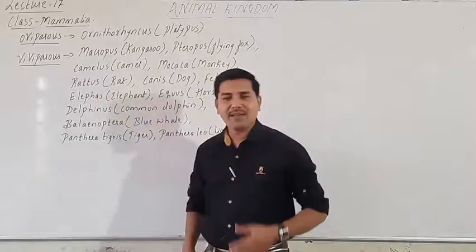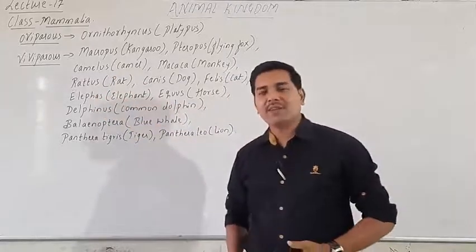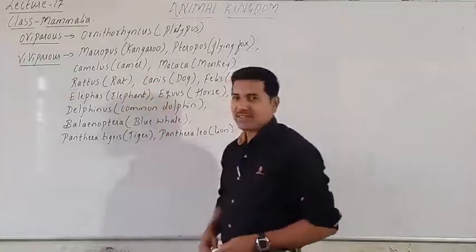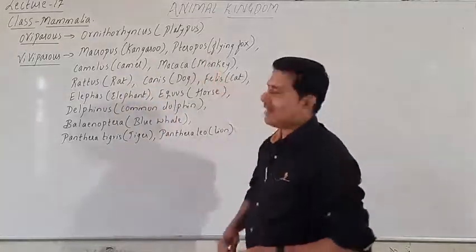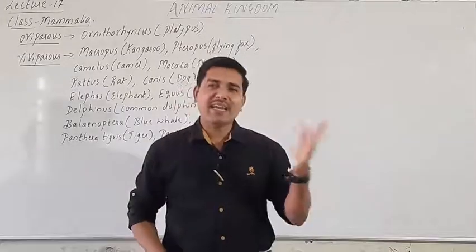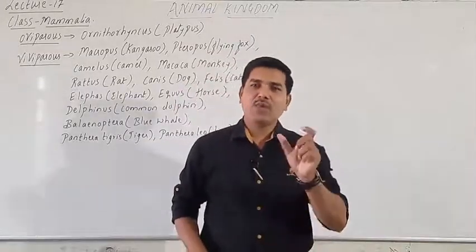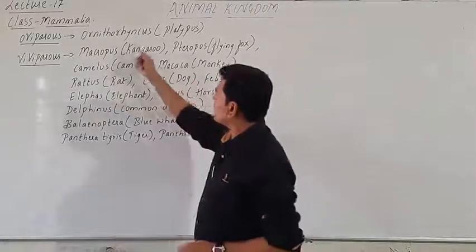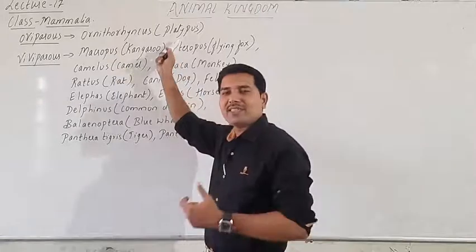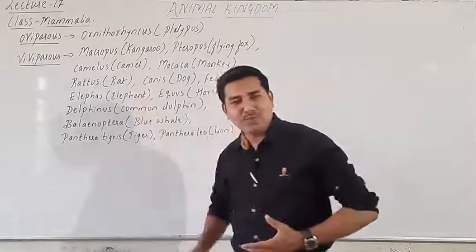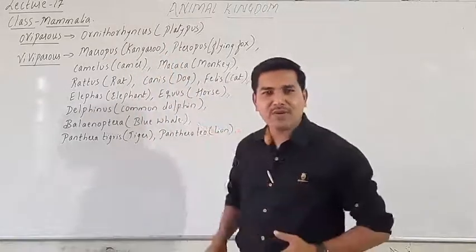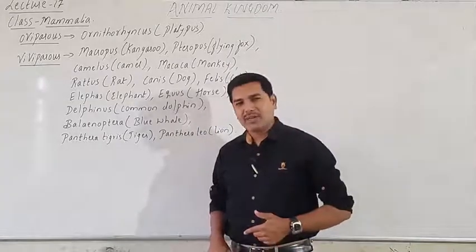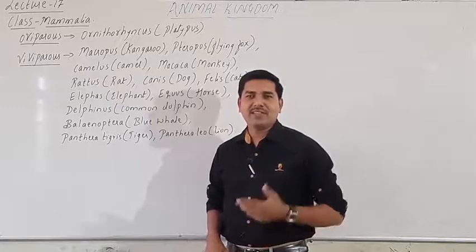In mammals we do have oviparous examples. Ornithorhynchus — meaning platypus — and echidna are oviparous animals. Remember, Ornithorhynchus meaning platypus is an egg-laying mammal. This is most important because it is the classical example from your NCERT which will be asked in your class tests as well as competitive exams.